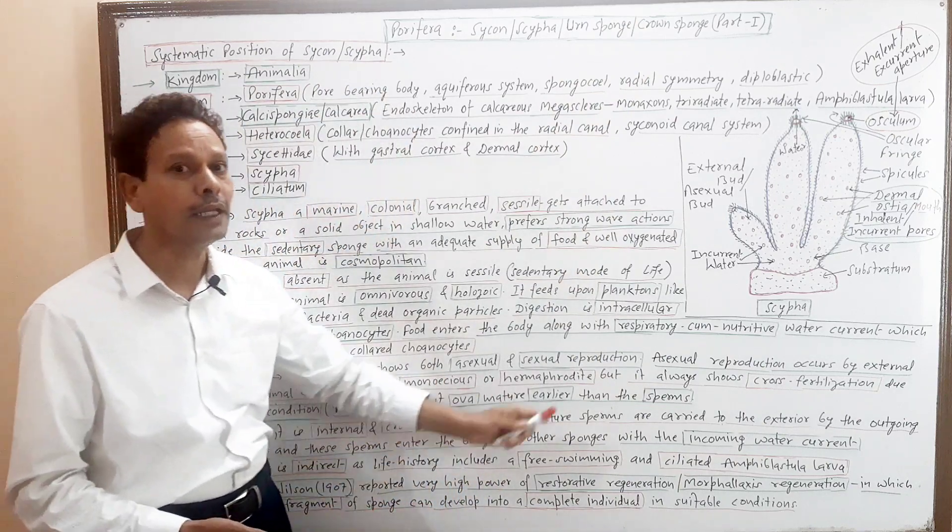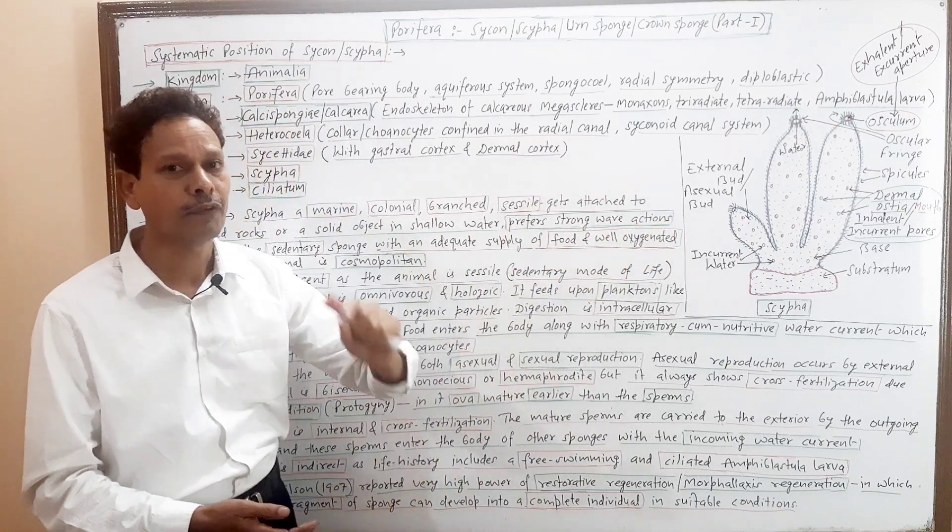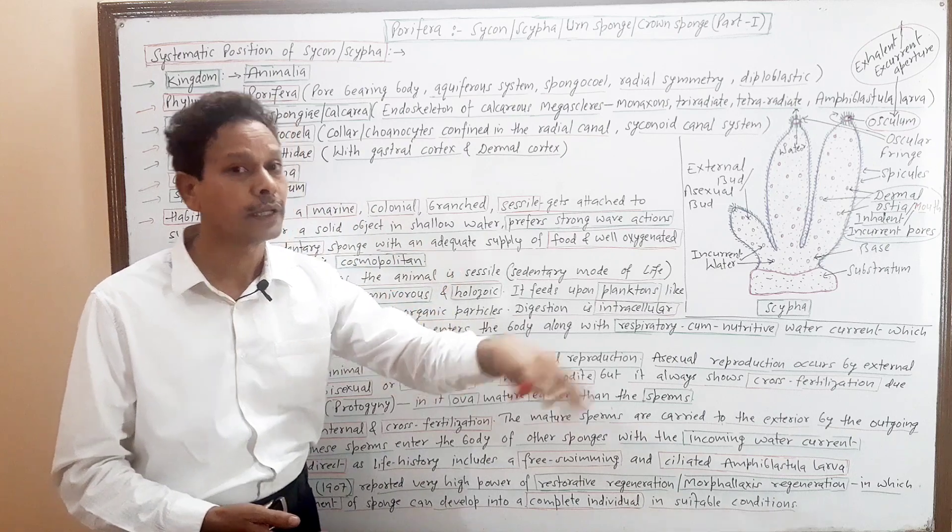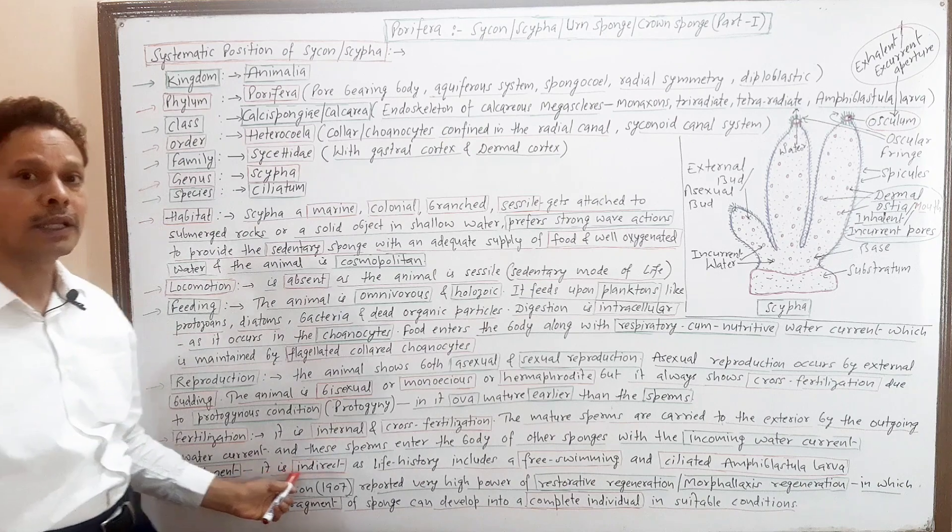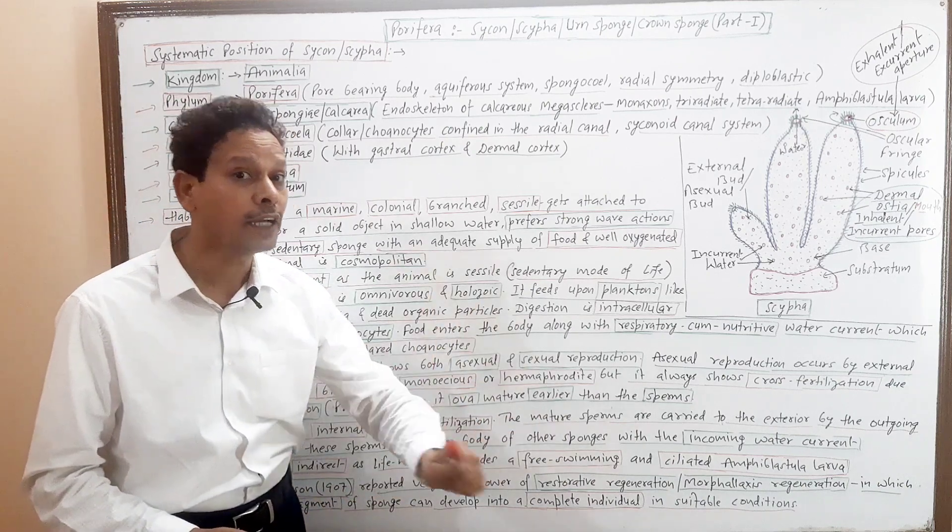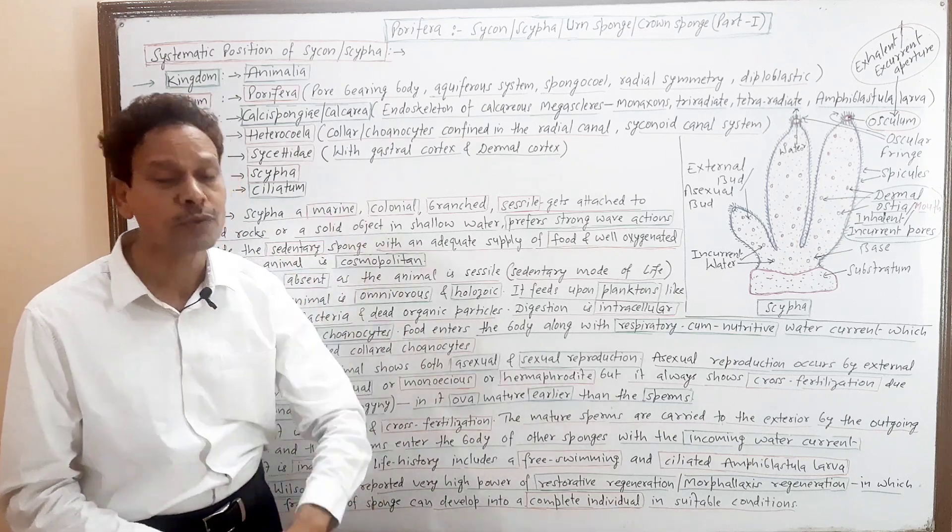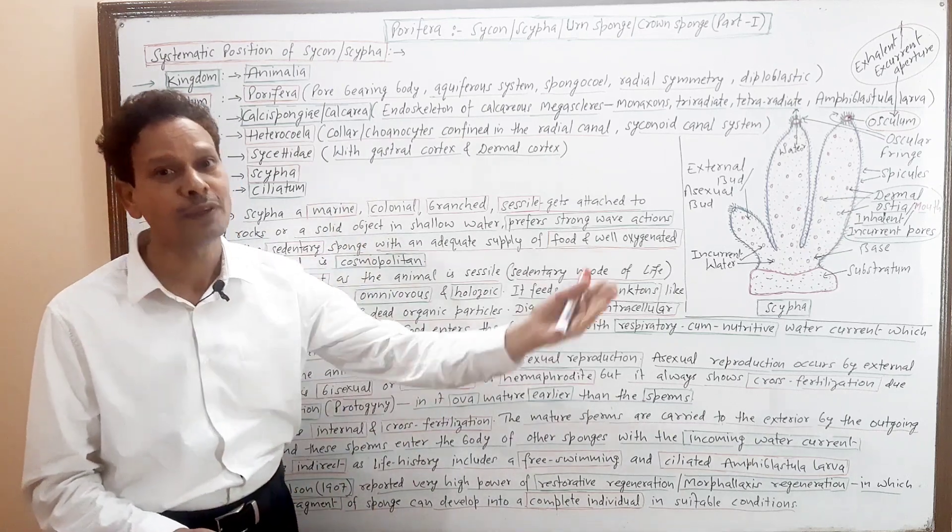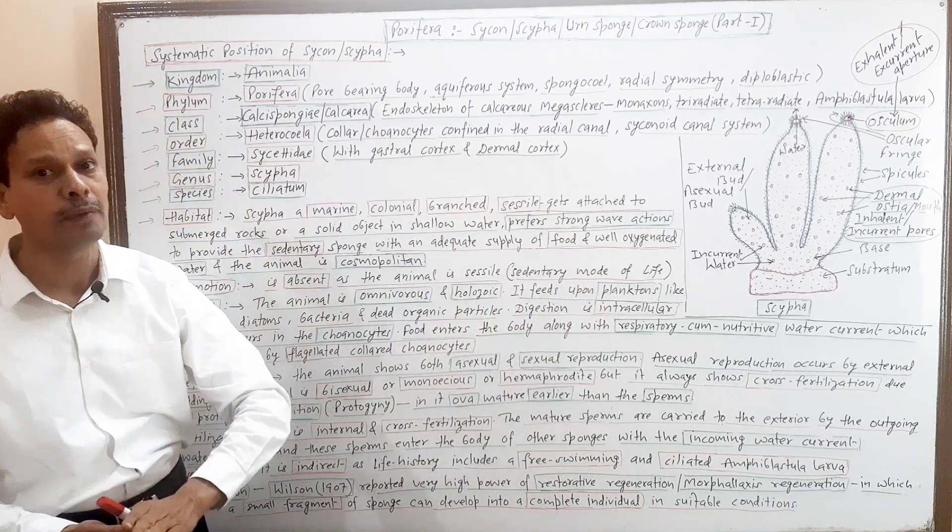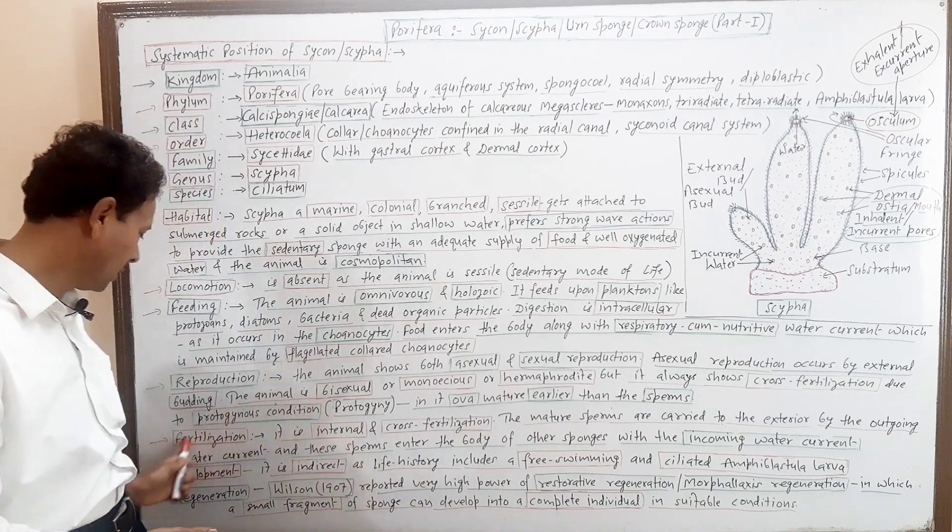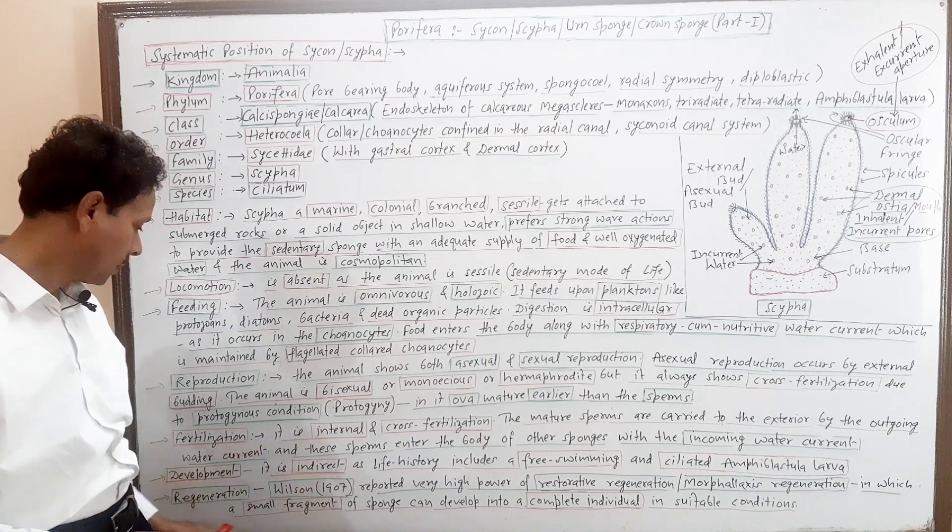Fertilization - fertilization takes place inside the body, it means it is internal fertilization and always it is cross-fertilization. Very important point: development. In their life history, development is indirect because larval stage is present, and that larva is hollow larva, free-swimming larva, and that larva is amphiblastula. Note this NEET students, the larval form is amphiblastula in their life history.